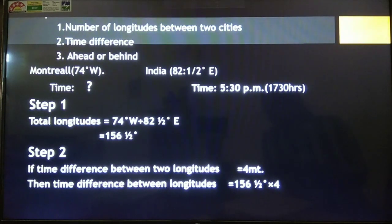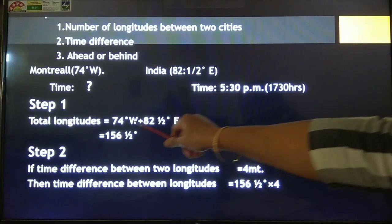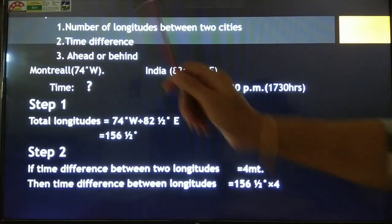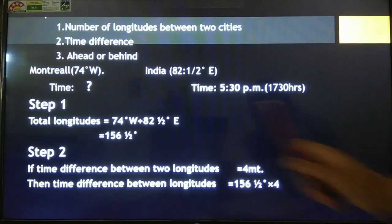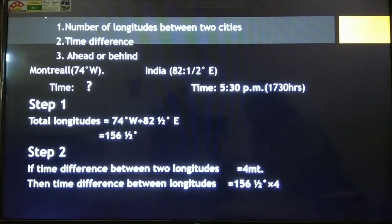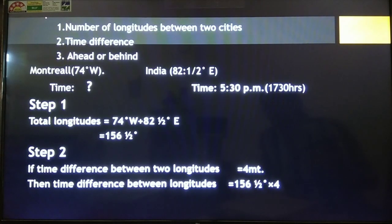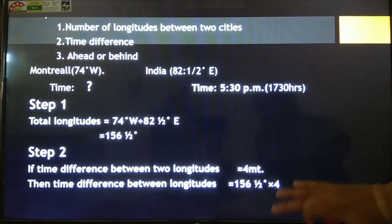If the cities are situated in two different hemispheres, we will add both the longitudes. When we add them, we get 156.5 degrees. This is the total number of longitudes between the two cities.